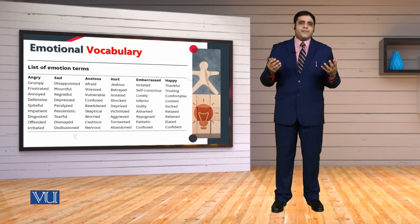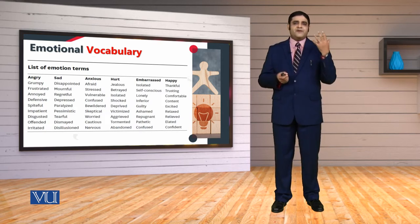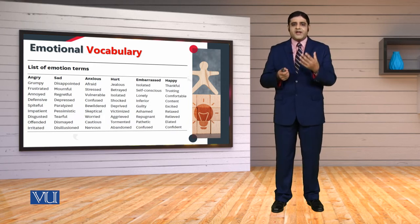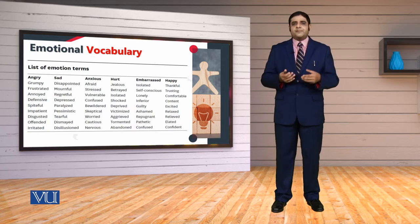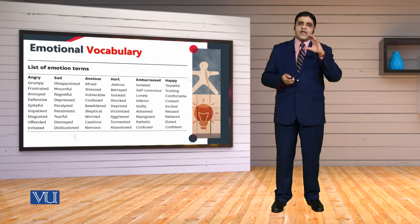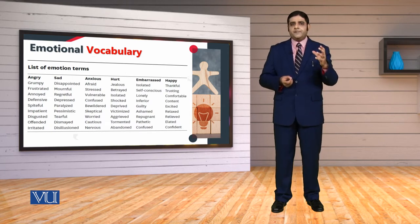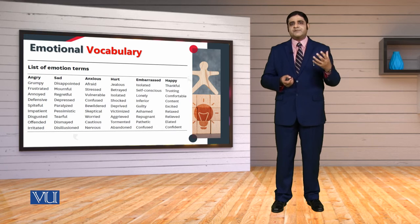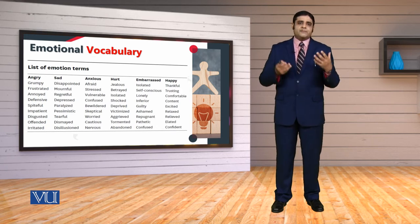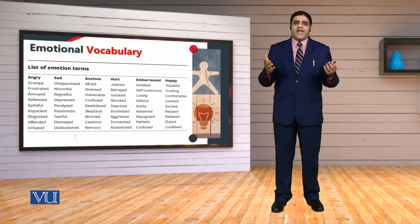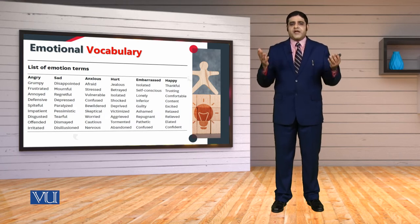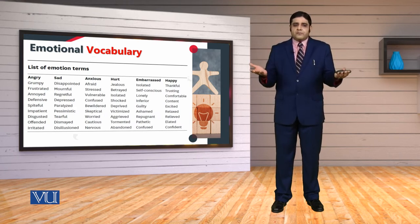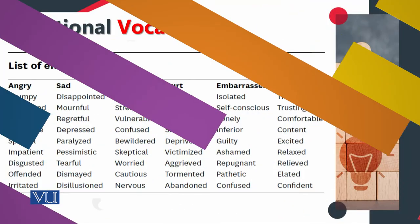We might be feeling angry, sad, anxious, hurtful, embarrassed, or we might be very happy. For example, when we say angry, it could also mean grumpy, frustrated, annoyed, defensive, or impatient. These expressions are all available to you, and you have to see what exactly you are feeling and when.